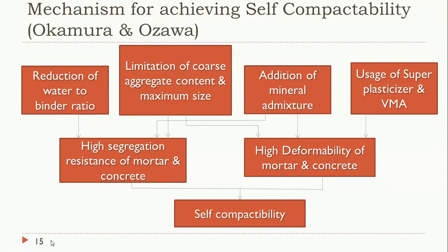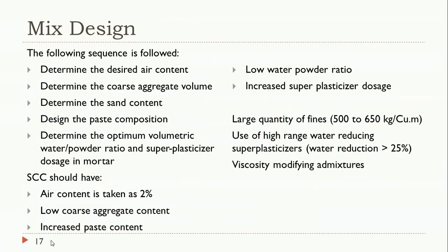Usage of superplasticizer, VMA, and mineral admixture improves high deformability — that is, high flowability — of the mortar and concrete. Self-compactability requires both high segregation resistance of mortar and concrete AND high deformability. High segregation resistance is obtained by reducing water-to-binder ratio, limiting coarse aggregate content, and using mineral admixtures. High deformability is obtained by adding mineral admixtures and using superplasticizers and VMA.